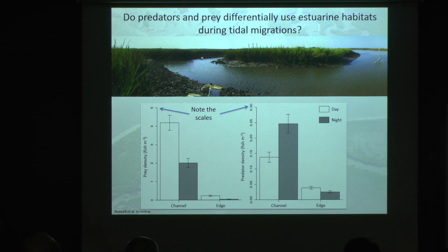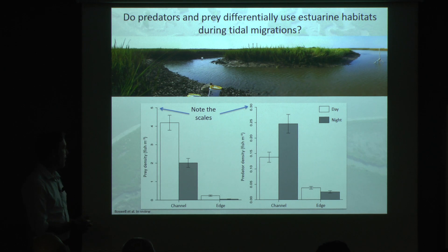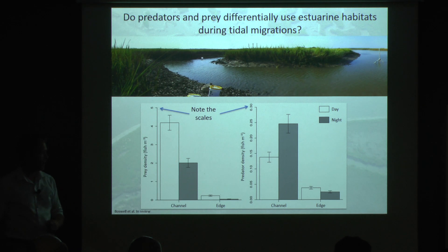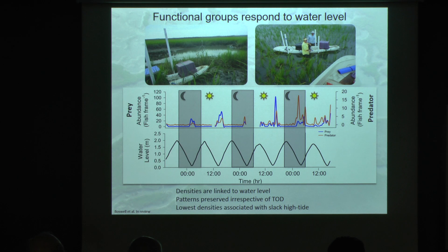This is a platform that lets us gain a lot of information about the ecosystem non-invasively. Some basic findings from this study: if we think about two functional groups — breaking things into predators and prey based on size — and then breaking that down further into who's occupying what part of the habitat and how they move between day and night, we can clearly see some interesting shifts between the two groups. Notice the difference in scales: many more prey than predators, and they tend to prefer channel over edge.